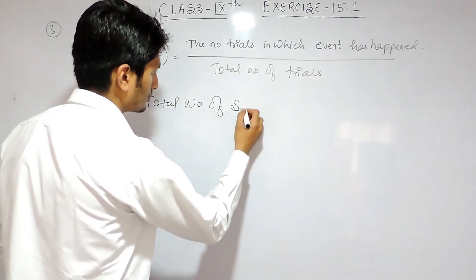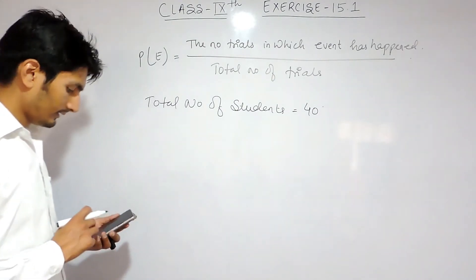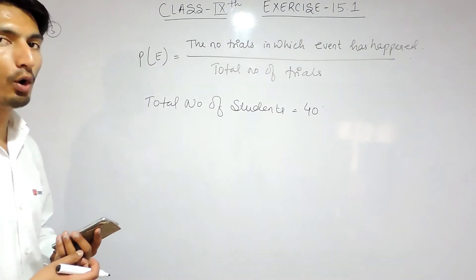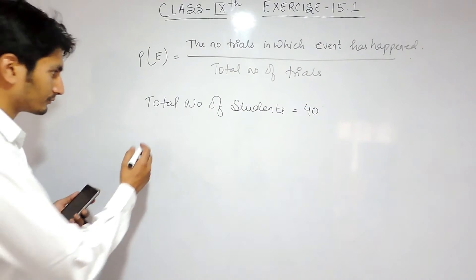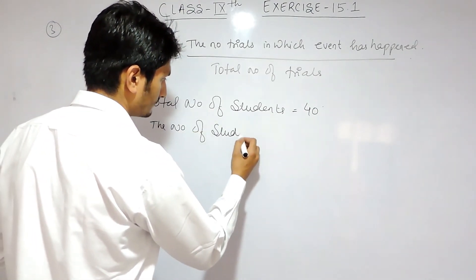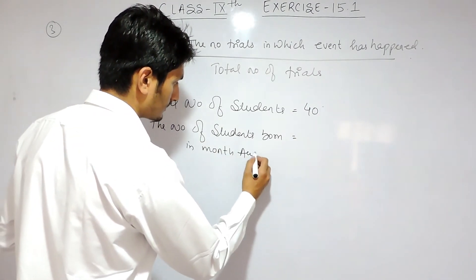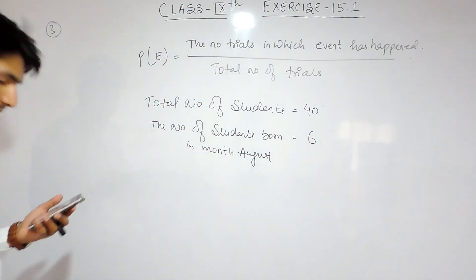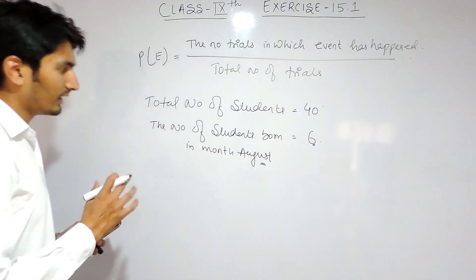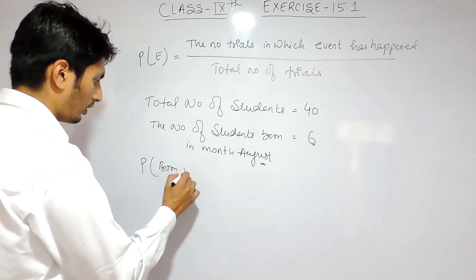The total number of students is 40. We have to find the probability that a student is born in the month of August. When you see the graph, you will find that the number of students born in the month of August is 6 — the bar for August goes up to 6.